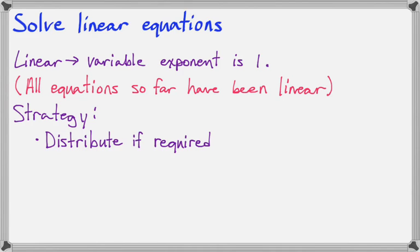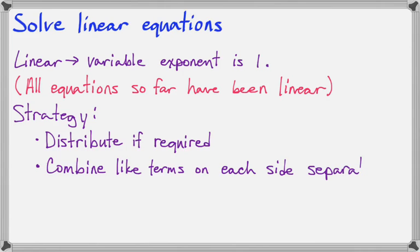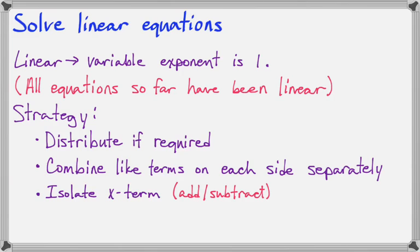First, if you see any distribution, go ahead and do that first. Then, if you see any terms to combine on the left side, or if you see any terms to combine on the right side, do those separately from each other, and then you can start solving. You want to first isolate the x term – that usually involves adding or subtracting to get all the numbers – all the constants on one side of the equal mark and all the x terms combined on the other side. And last, we will isolate x, and this is usually a multiplication or division step.